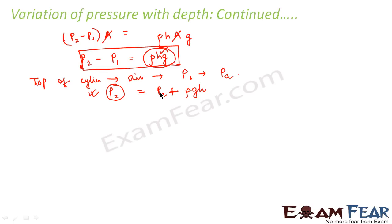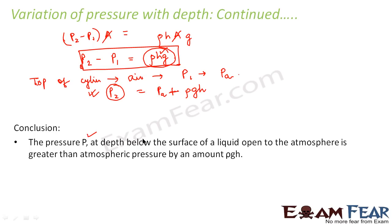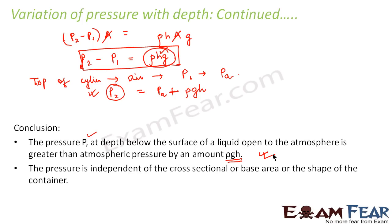So we understand how pressure changes with depth. The pressure at any point at a depth h below the surface of a liquid open to the atmosphere is greater than atmospheric pressure by ρgh. Furthermore, pressure is independent of the cross-sectional area, base area, or shape of the container — it depends only on ρ, g, and h.